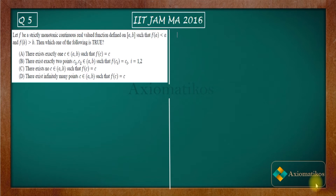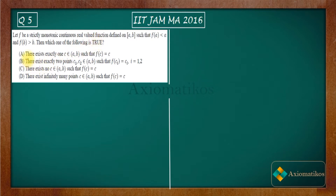Let f be a strictly monotonic continuous real-valued function defined on the closed interval [a, b] such that f(a) < a and f(b) > b. Then which one of the following is true?